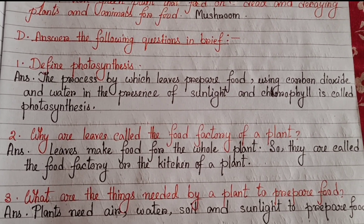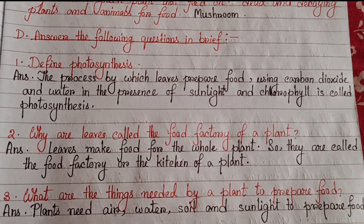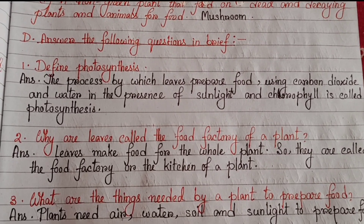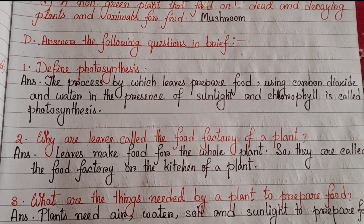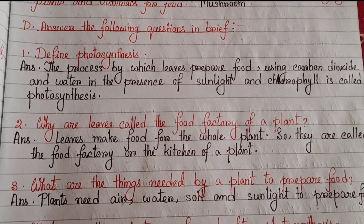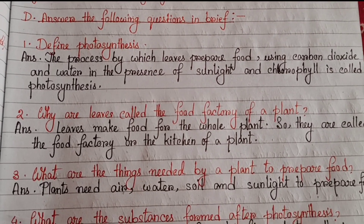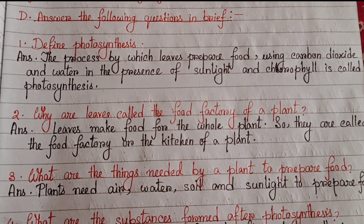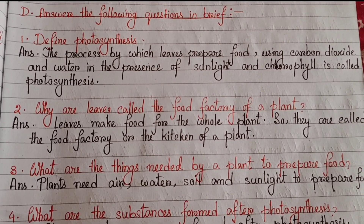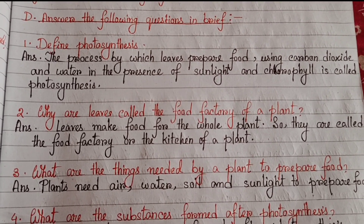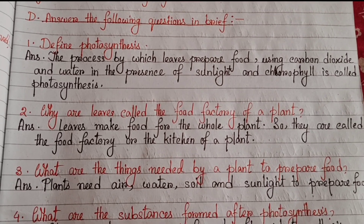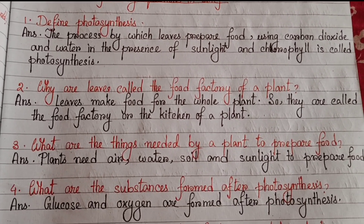Now we are going to solve some question answers. Number one: Define photosynthesis. The process by which leaves prepare food using carbon dioxide and water in the presence of sunlight and chlorophyll is called photosynthesis. Number two: Why are leaves called the food factory of a plant? Leaves make food for the whole plant, so they are called the food factory or the kitchen of a plant.